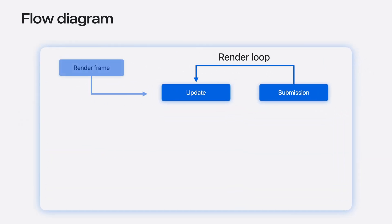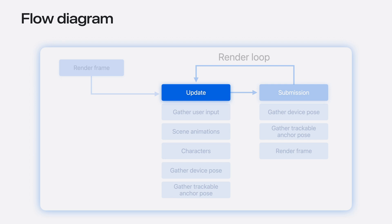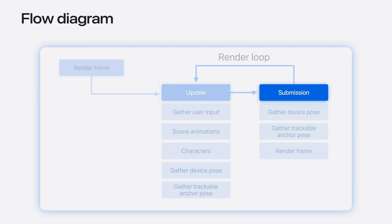Let's look at the render loop in a bit more detail. It consists of two stages. First is the update stage, which includes simulation-side logic like interactions and physics simulation — this usually happens on the CPU side. You will need both trackable anchor and device pose to correctly calculate your simulation logic. Second is the submission stage, where the final result is rendered into a texture — this happens on the GPU side. Anchor pose prediction function accuracy improves as the frame presentation time is closer to when the prediction query is called. For a better anchoring result, you will query the anchor and device pose again to ensure your result is as accurate as possible.